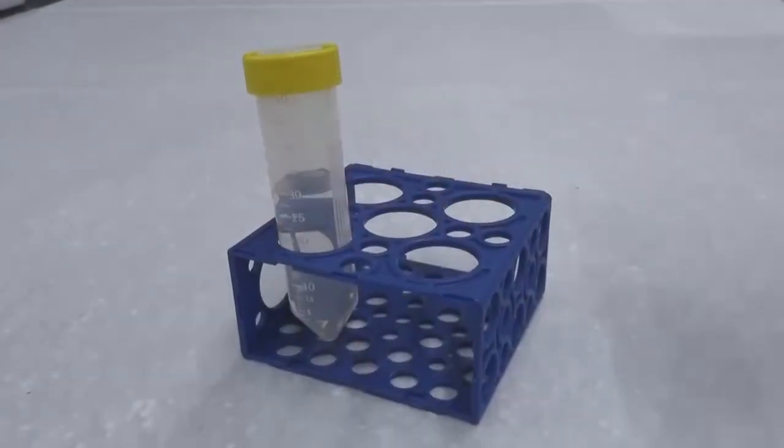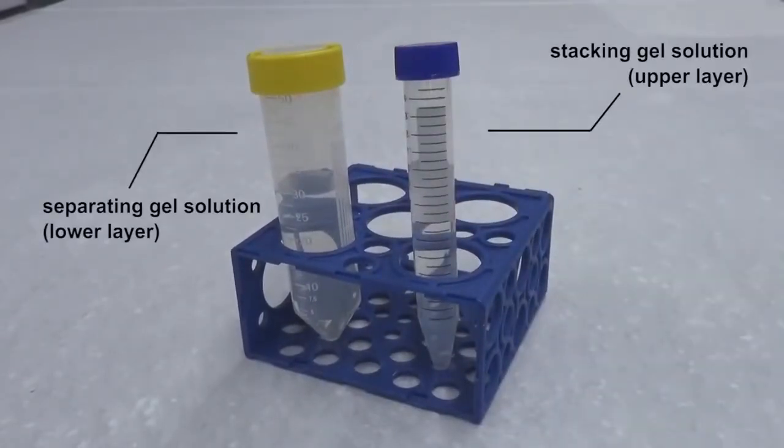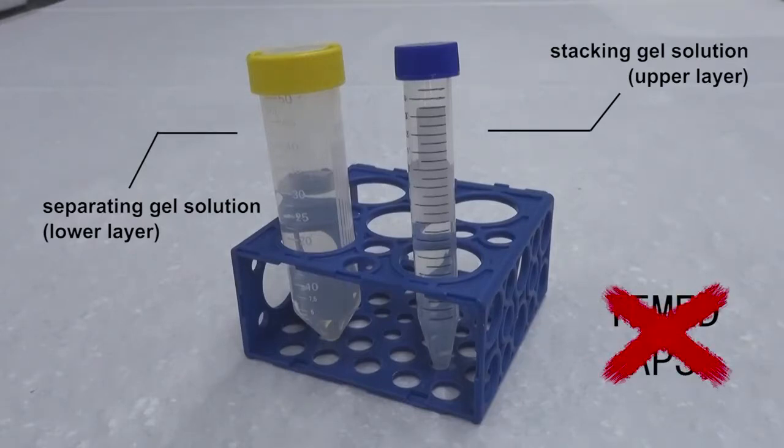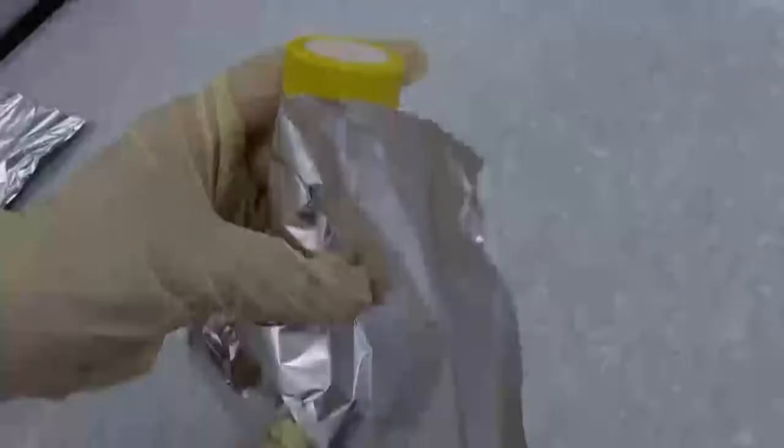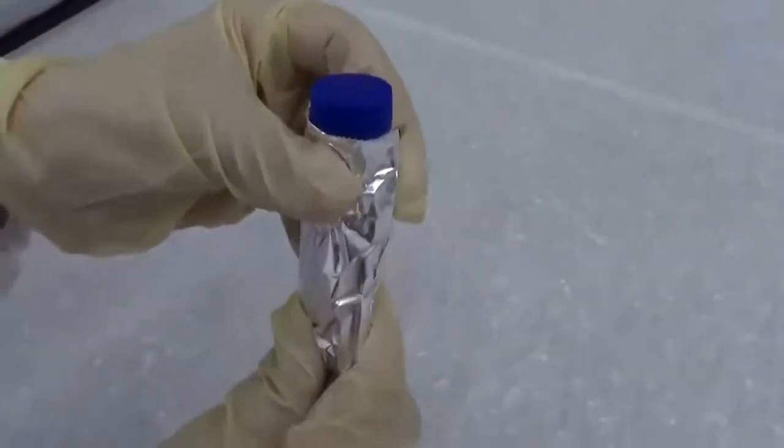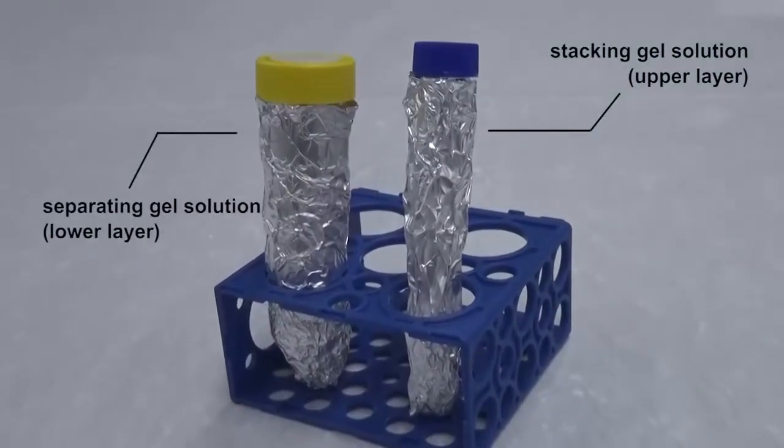Please follow the laboratory instruction to prepare separating gel solution, lower layer, and stacking gel solution, upper layer. Note, do not add the catalyst TEMED and the free radical provider APS at this moment to avoid initiating the reaction prematurely. Cover both gel solutions with aluminum foil to avoid light. Label both tubes. Keep them at room temperature for use.